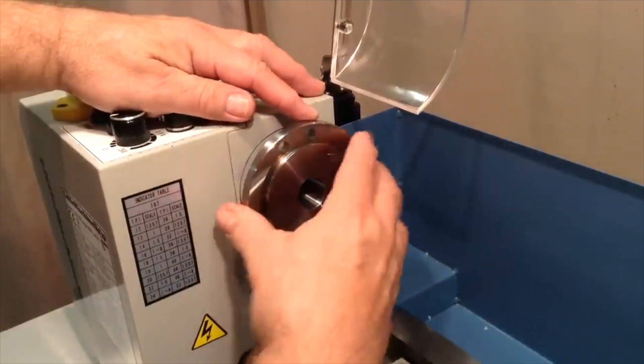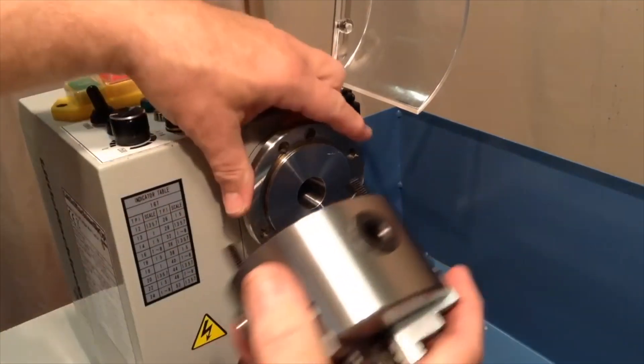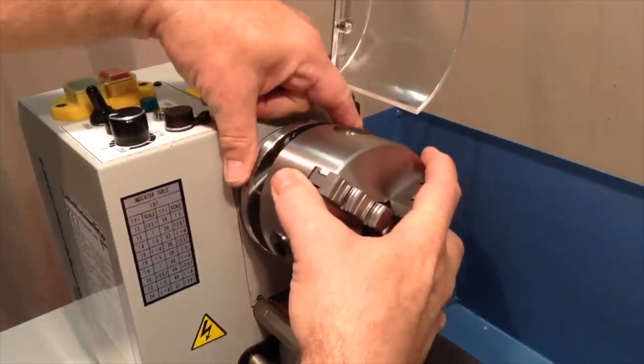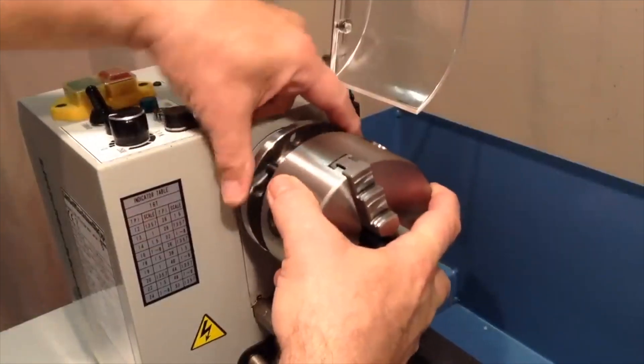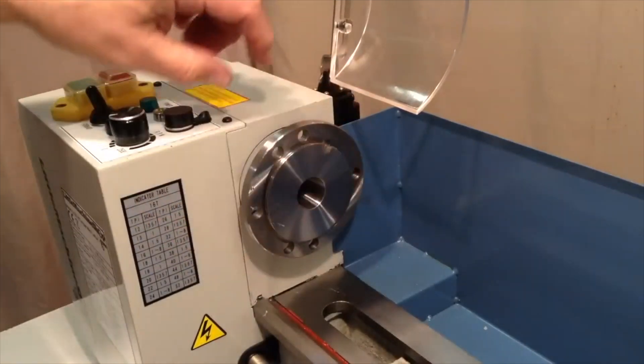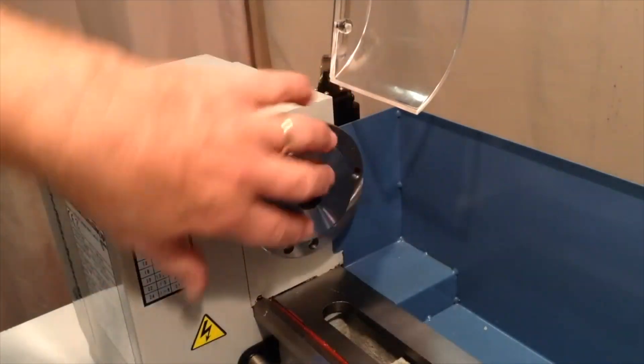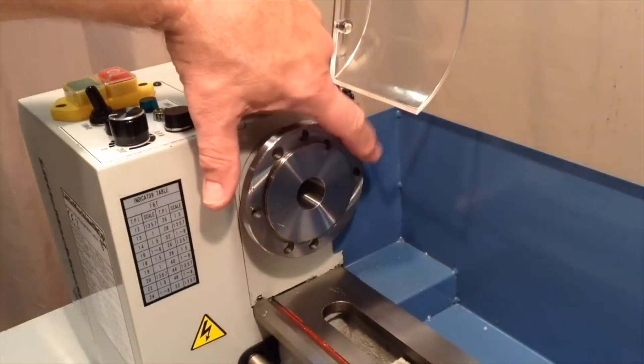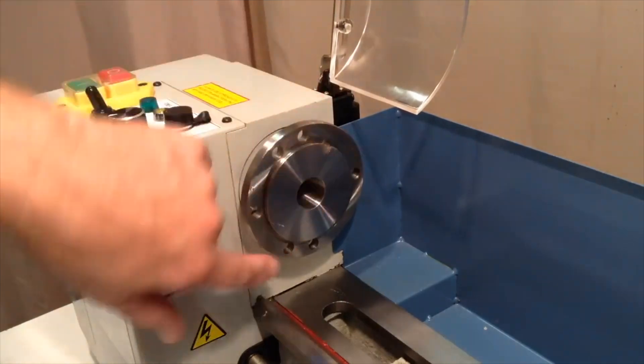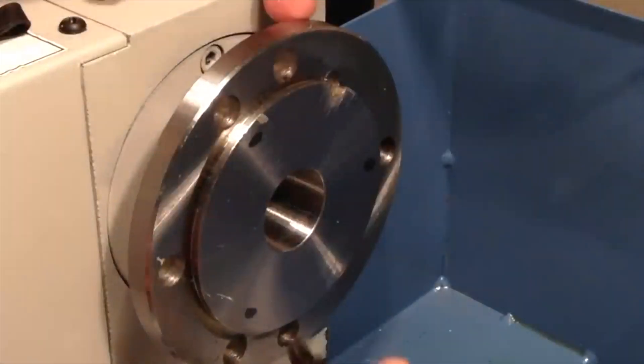There's a series of holes along here that mate up with the 3 jaw chuck in this case. Sometimes it's a little tricky to figure out which set of holes goes with which type of chuck. The second set of holes is for a 4 jaw chuck, so the 4 jaw chuck has the holes arranged in an X or cross shape. Then the 3 jaw chuck shares this hole here with both chucks, and you have three holes 120 degrees apart.